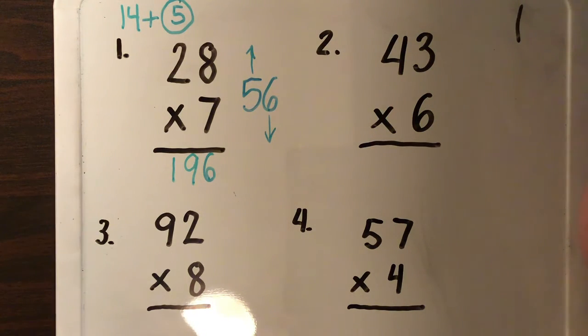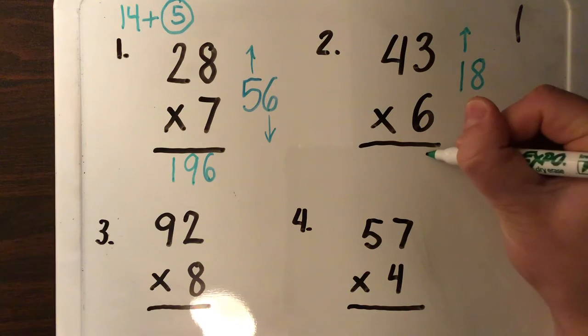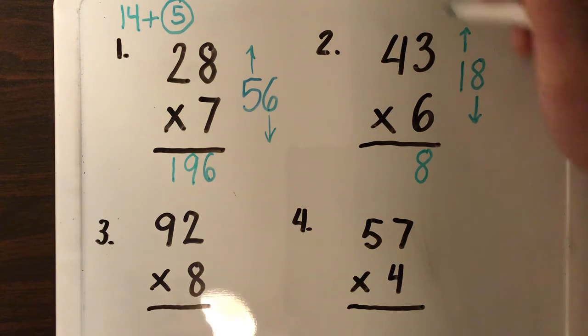Okay, moving on to number two. Six times three. Let's think about this. Six times three is 18. I'm going to write my 18 here. I put my ones down and my tens up. My eight goes down here. My one ten comes up here. I circle and I plus it.